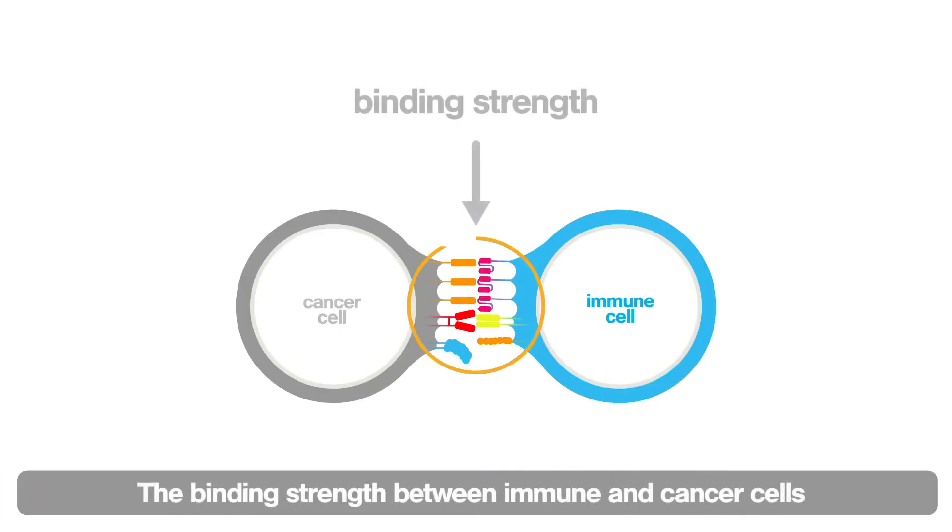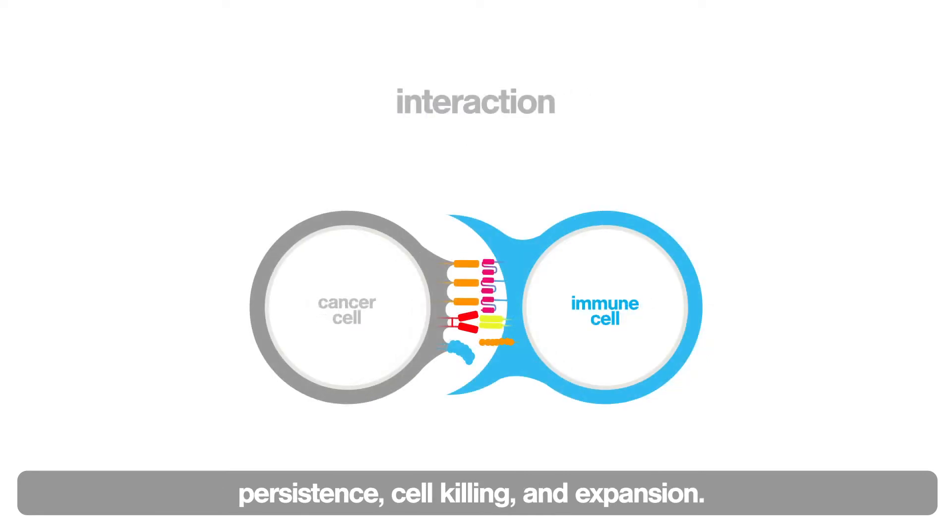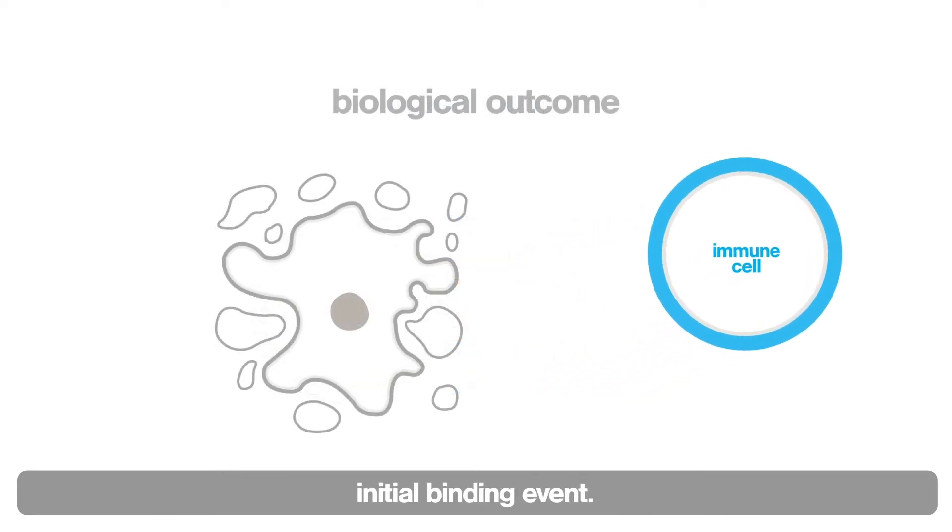The binding strength between immune and cancer cells can set important events in motion: persistence, cell killing, and expansion. They are all a function of the signals provided upon that initial binding event.